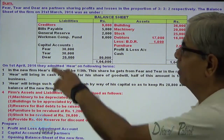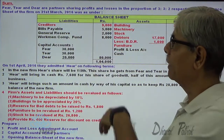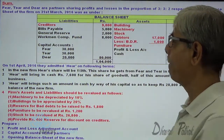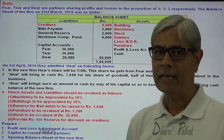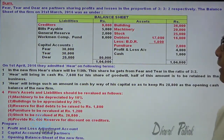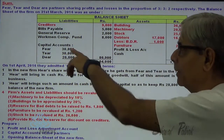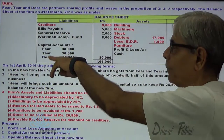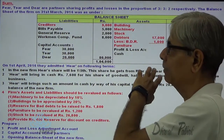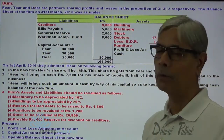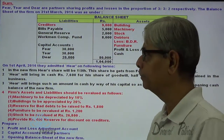The balance sheet of the firm as on 31st March 2016 was as under. On the asset side, you are given: building, machinery, stock, debtors, furniture, profit and loss account, cash balance, capital accounts of Fear and Tear, bills payable, general reserve, and workman compensation fund.